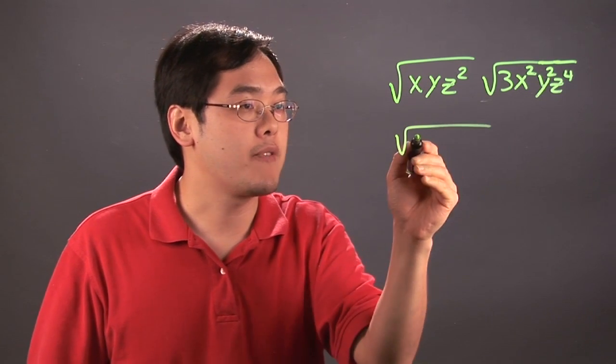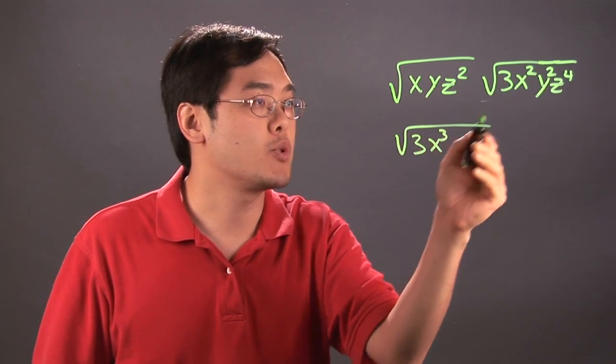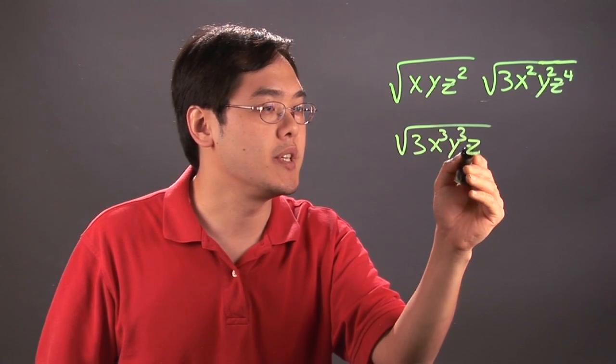So you have 3, and then x times x² is x³, y times y² is y³, and z² times z⁴ is z⁶.